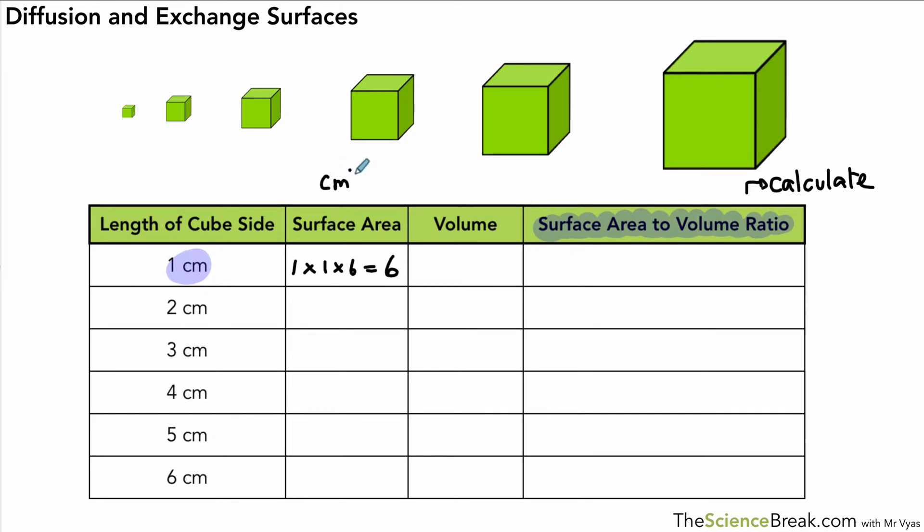The unit for that is centimeters squared and the unit for volume is centimeters cubed. So how do we work out the volume? Well it's a case of length times width times height so that's just one times one times one and the answer for that is of course one and we can use those to work out a surface area to volume ratio of six to one. You can also treat the ratio sign or the colon there as a divide sign so it'd be six divided by one and that would give us a value of six. So the surface area to volume ratio for the first cube is six.